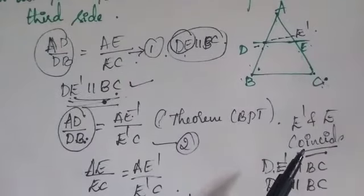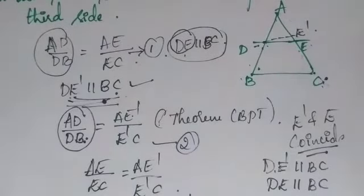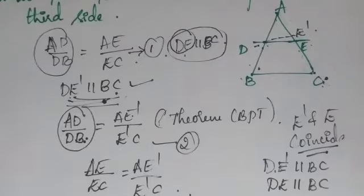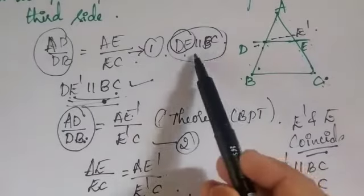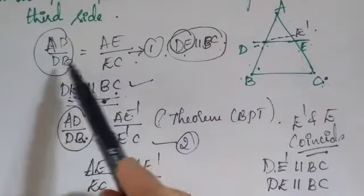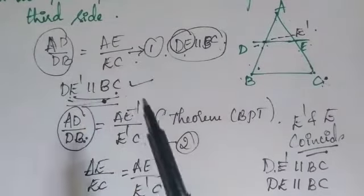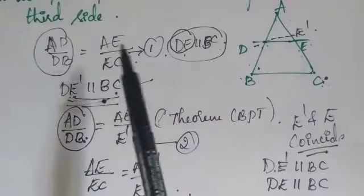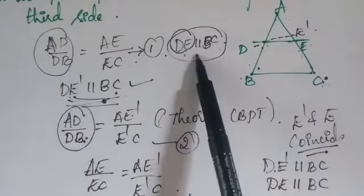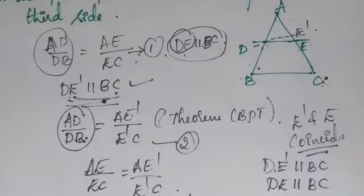This completes the proof for the converse of the Basic Proportionality Theorem: if a line divides a triangle in the same ratio, then that line is parallel to the third side. Remember both theorems: if lines are parallel, the ratios are equal; conversely, if the ratios are equal, the lines are parallel.